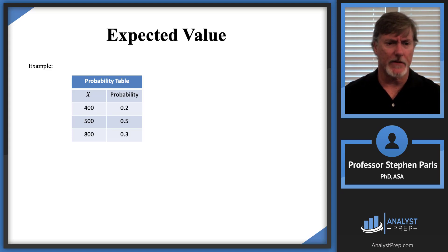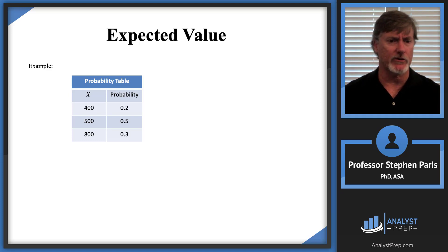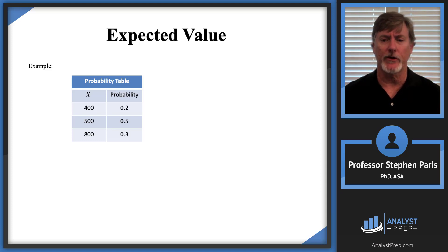Let's look at this particular example. We have a discrete random variable with three values in its support: 400, 500, or 800, with corresponding probabilities of 0.2, 0.5, and 0.3, respectively.